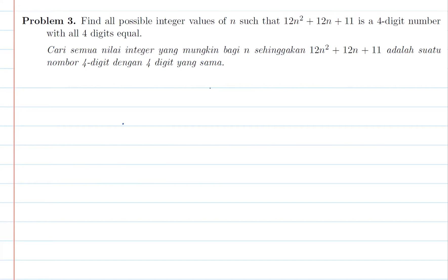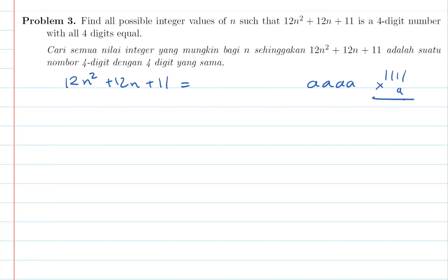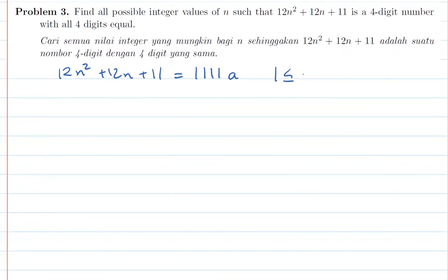Problem three: Find all possible integer values of n such that 12n² + 12n + 11 is a four-digit number with all four digits equal. In other words, 12n² + 12n + 11 equals some number AAAA, which equals 1111 times a, where a is between 1 and 9. A cannot be zero because zero is not a four-digit number.